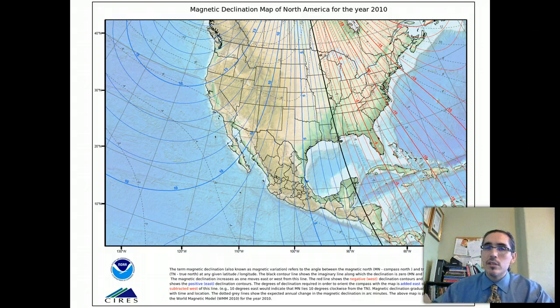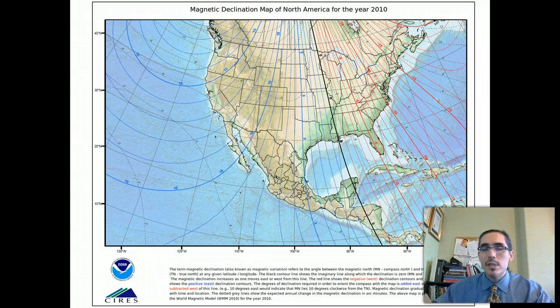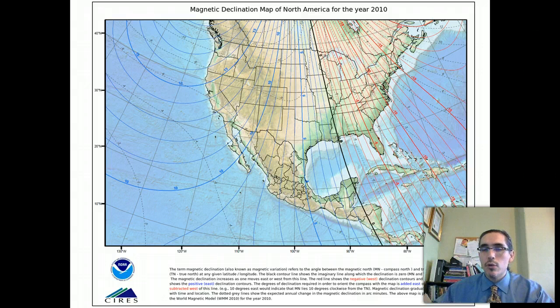This allows you to adjust for the difference between magnetic north and true north. So for example, here in Massachusetts, our declination is minus 15, which means that the compass always tends to point a little too far to the west by about 15 degrees. And so if you want to know true north with the magnetic compass here, you need to adjust for that difference between the two norths.